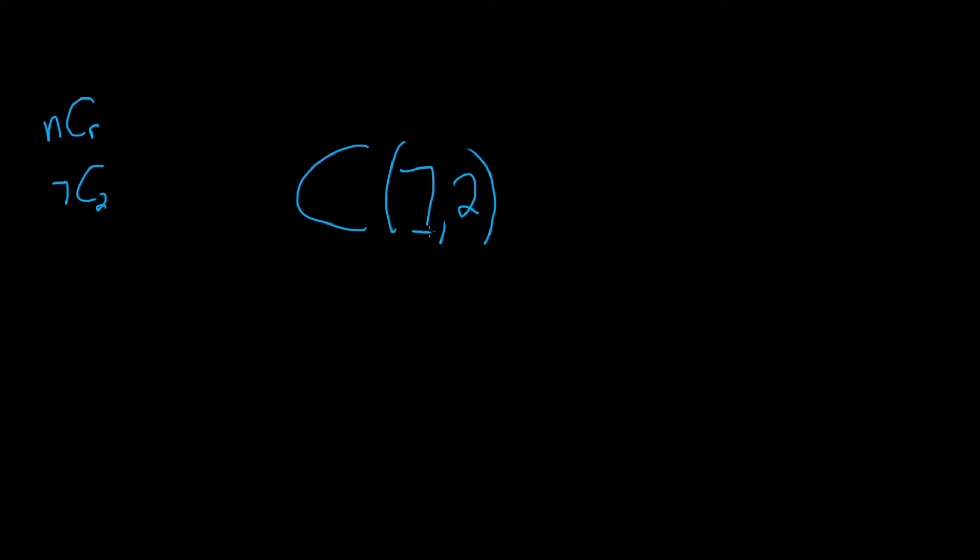So you have 7 objects and you're choosing r of them, in this case 2 of them, without regard to order. This is how many ways you can take 2 things from a group of 7 without regard to order.